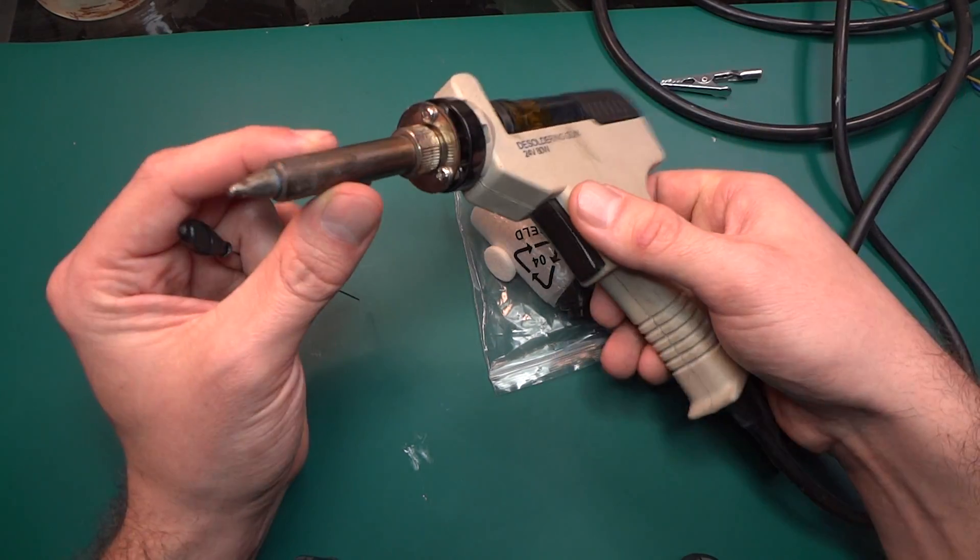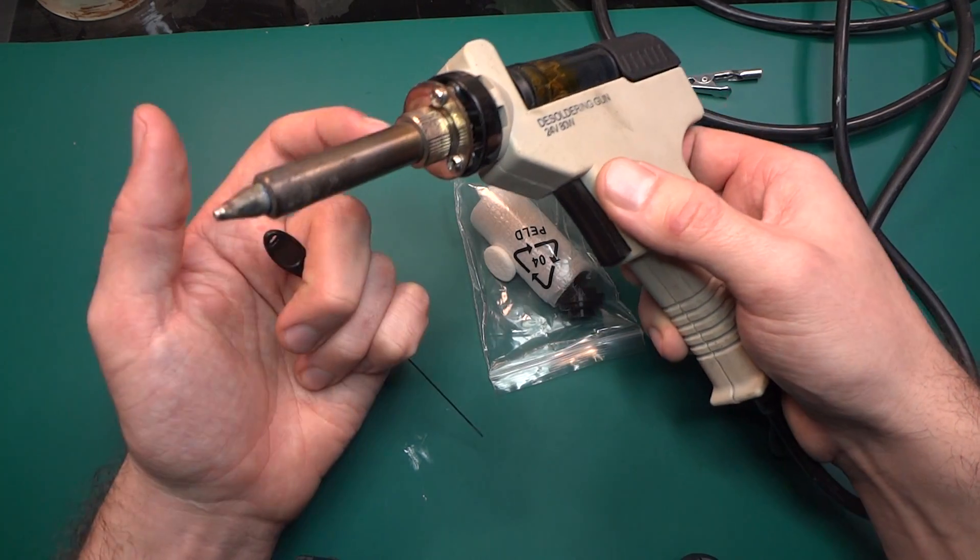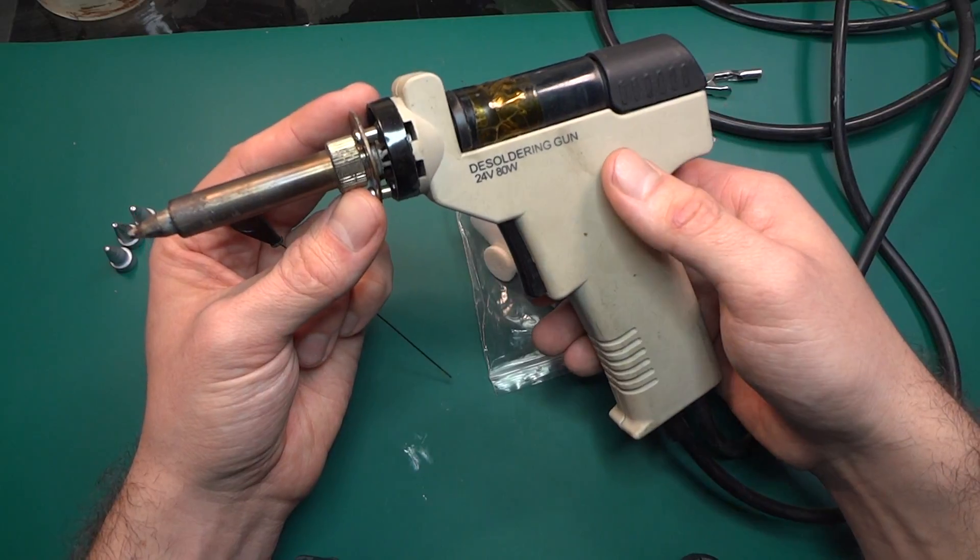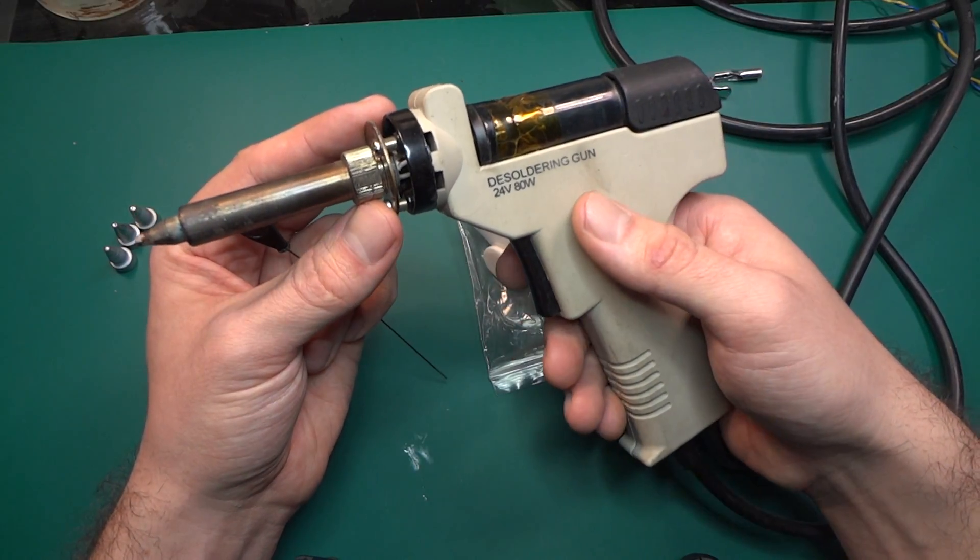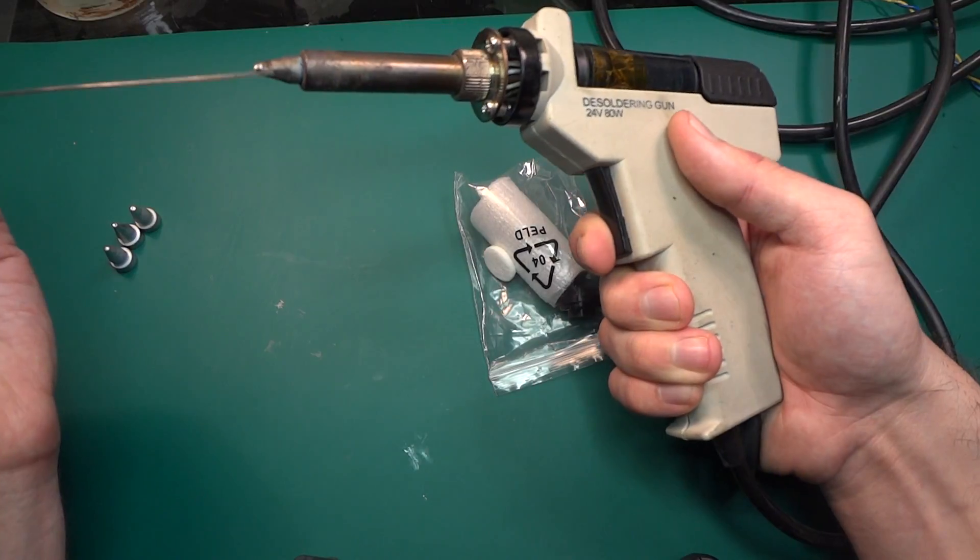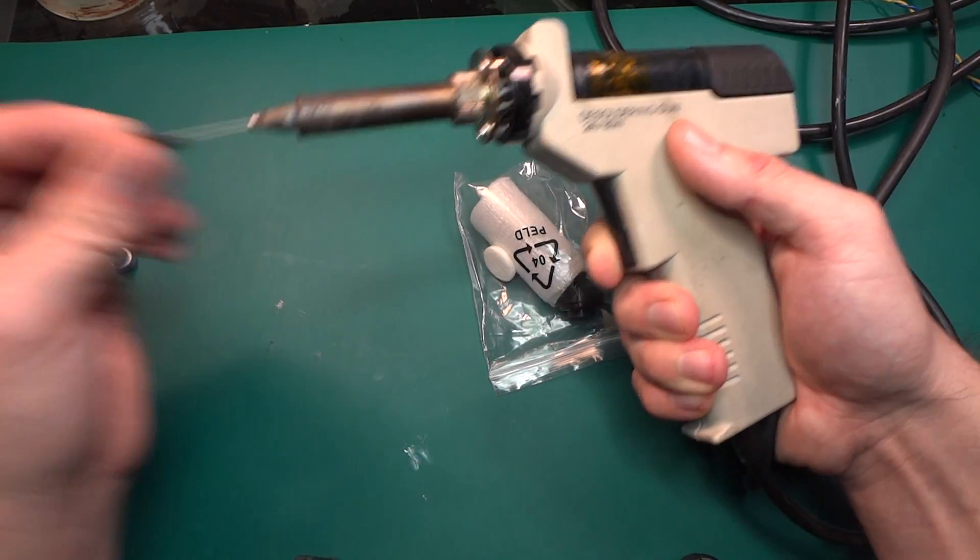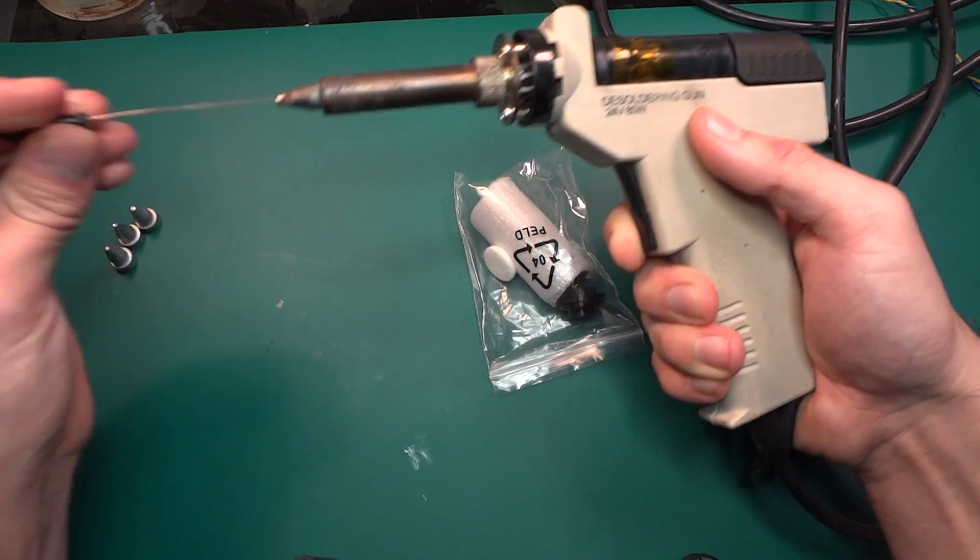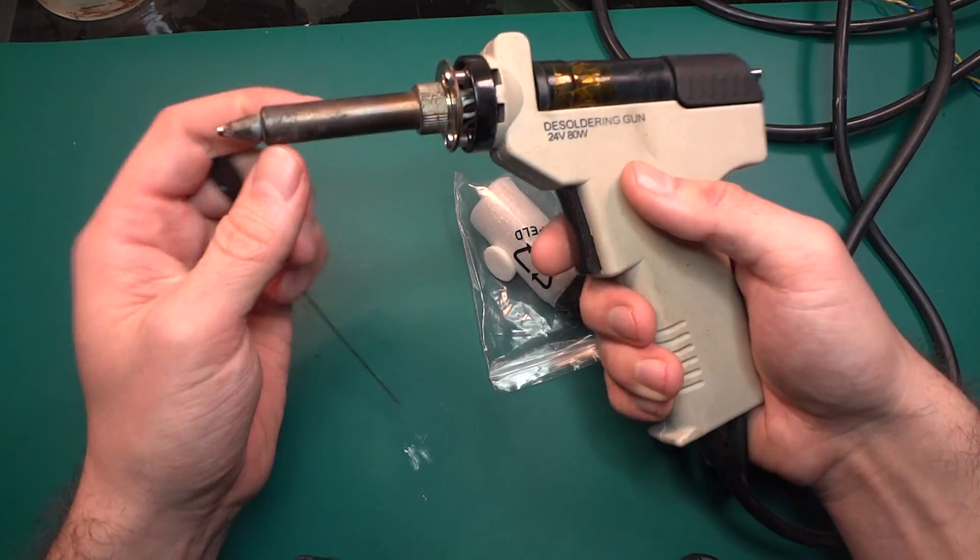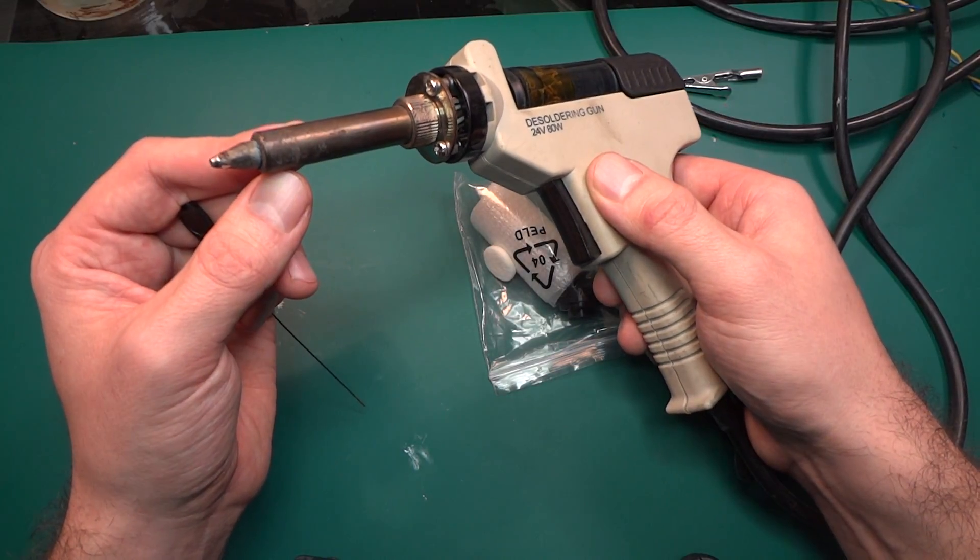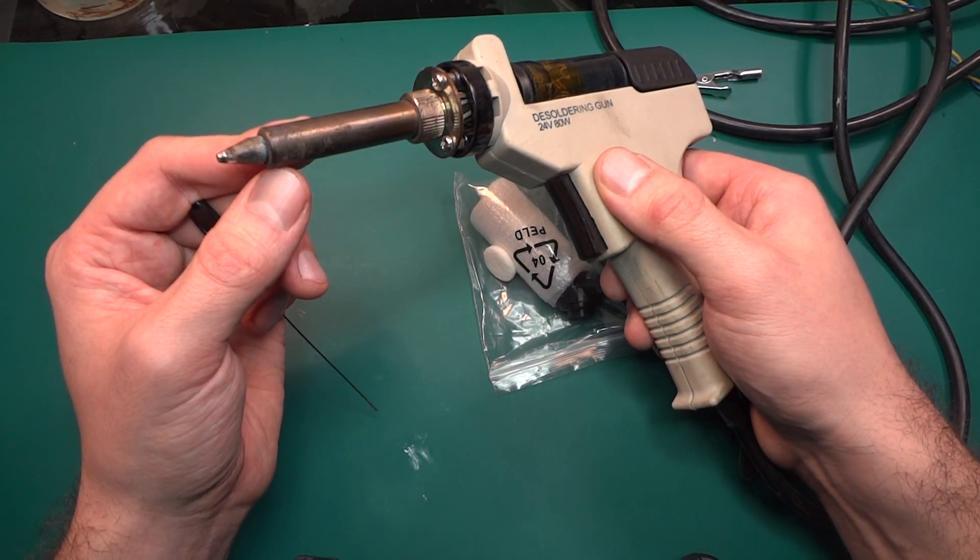So basically when it clogs inside the barrel, what I'm doing is I'm setting the temp for the maximum possible, I hit the suction and you guide this inside and you're doing like this.